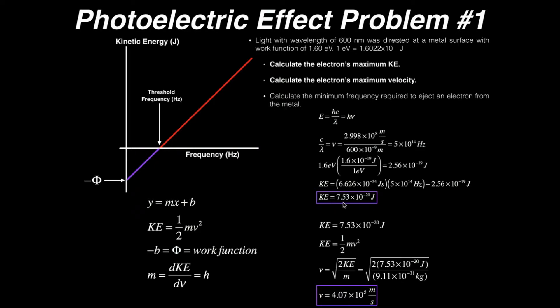That gives me the kinetic energy of that electron, which is its maximum at that frequency: 7.53 times 10 to the minus 20th joules. You're dealing with electrons, so the numbers you get are going to be very small — just expect them to be small for these kinds of problems.